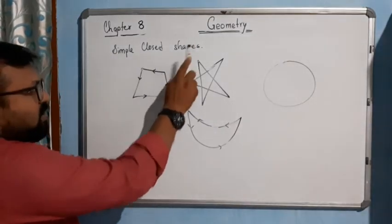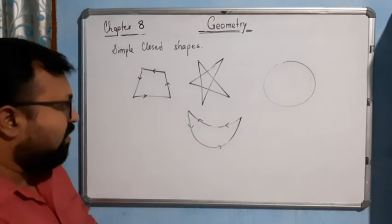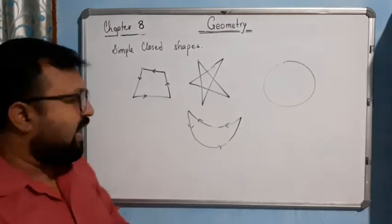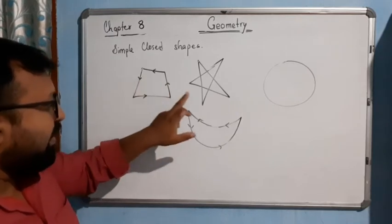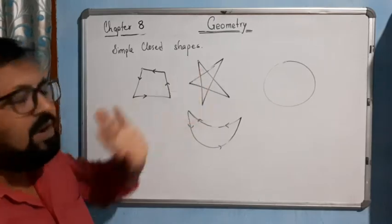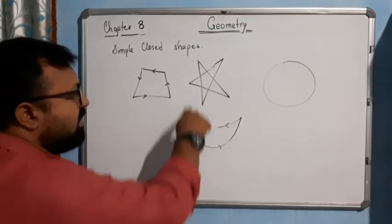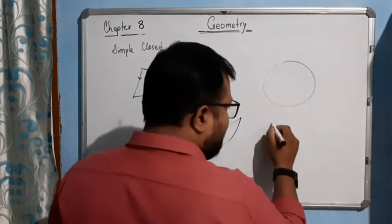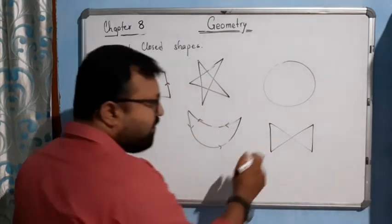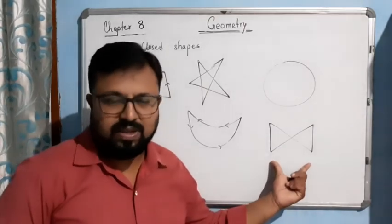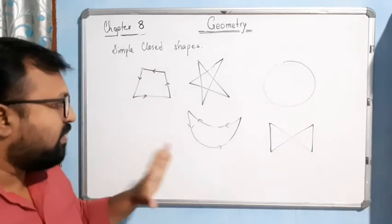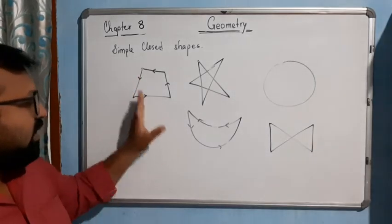But if you talk about simple closed shape, in a simple closed shape the lines should not be intersecting with each other. In this case it is a simple closed figure, but in this case it is not a simple closed figure — we simply say it is a closed figure but not simple, because here the lines are intersecting with each other. So for a simple closed figure, the lines should not intersect with each other.